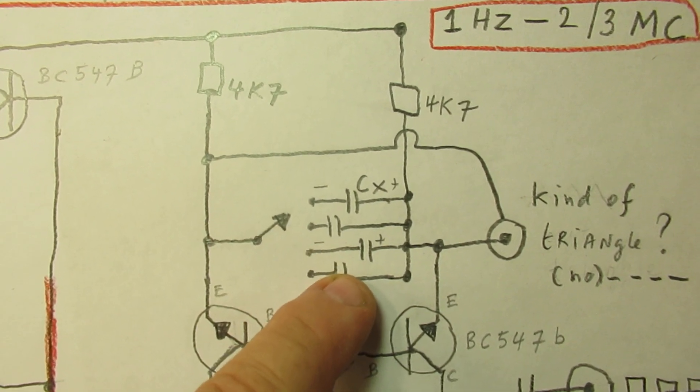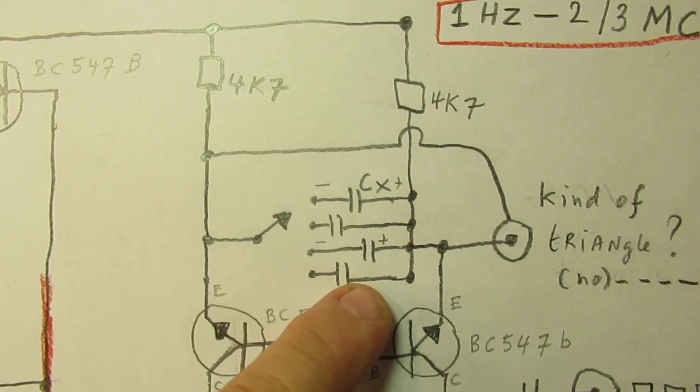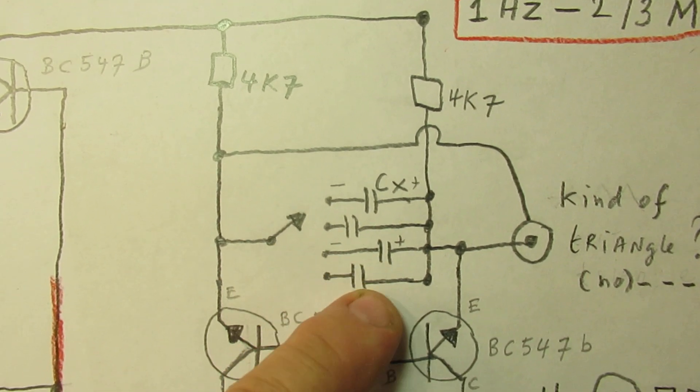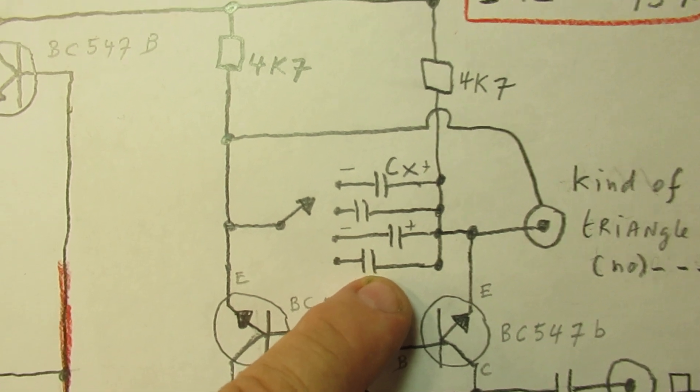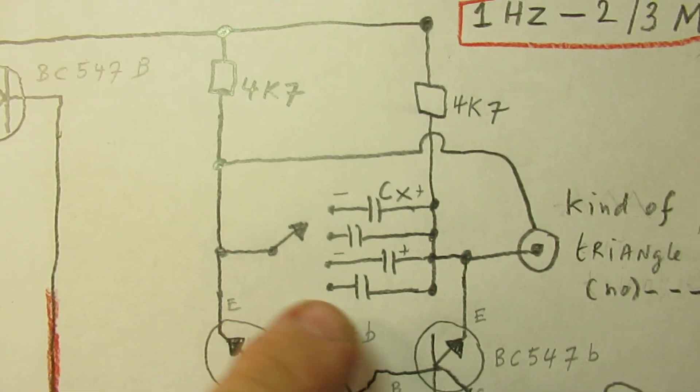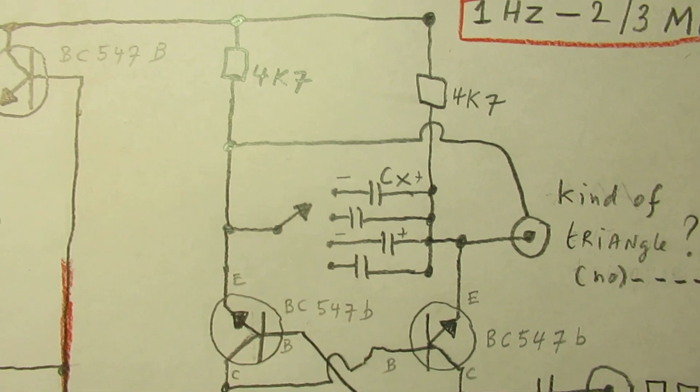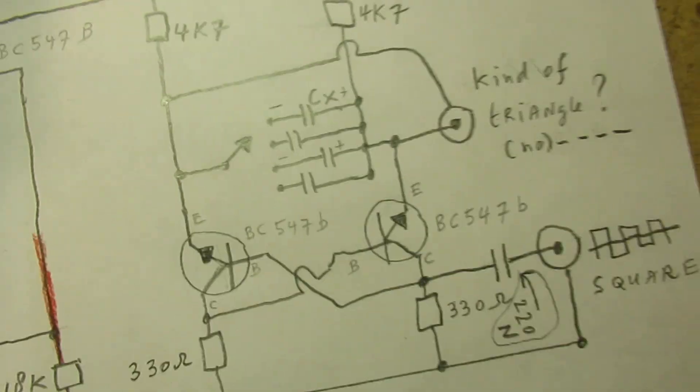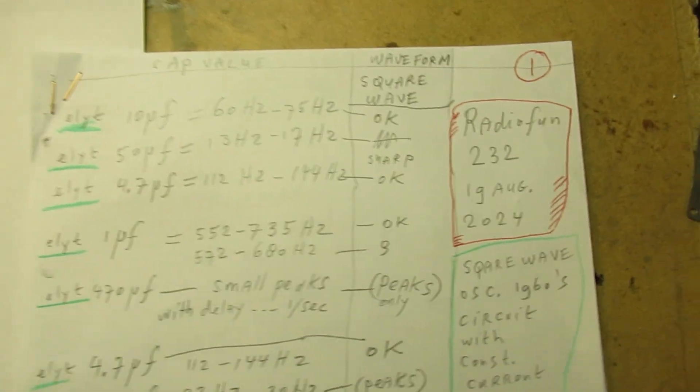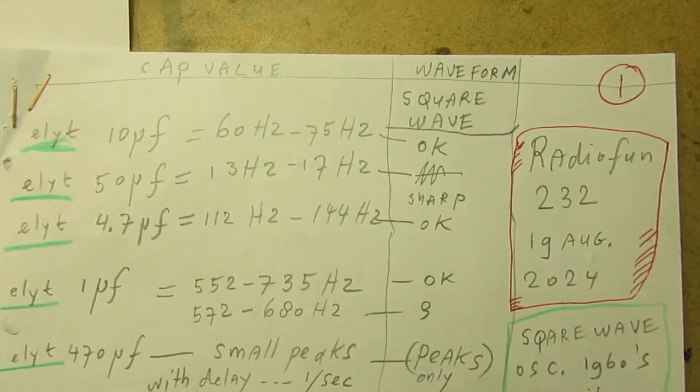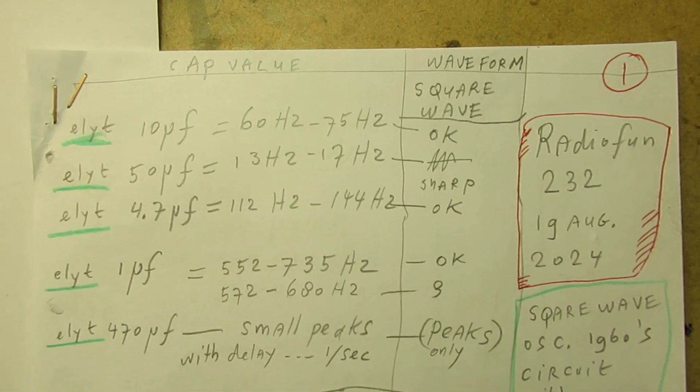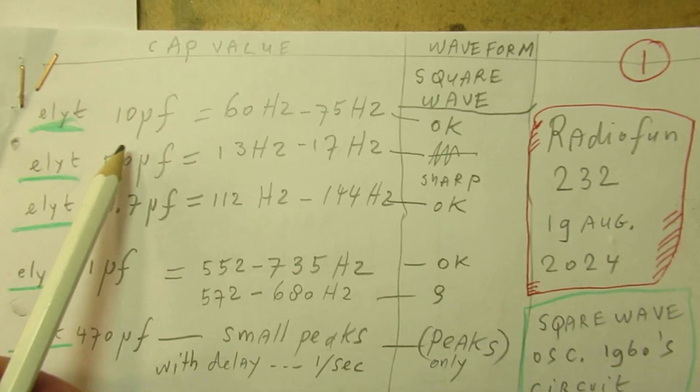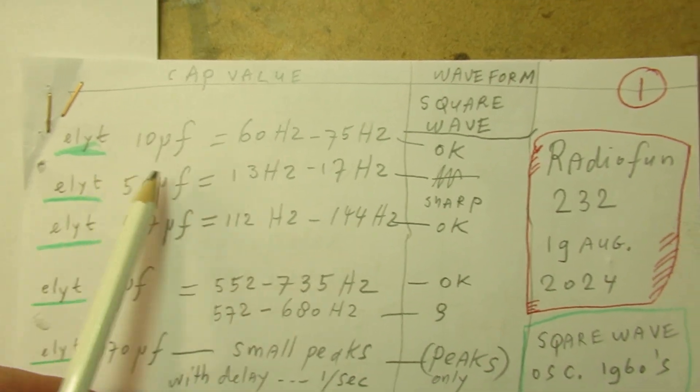Three microfarad non-polar and three microfarad electrolytic. It directly shows that with electrolytic capacitors you have other results in one way or another. Let's pan over the experimental results. 10 microfarad electrolytic, 60 hertz up to 75 hertz.